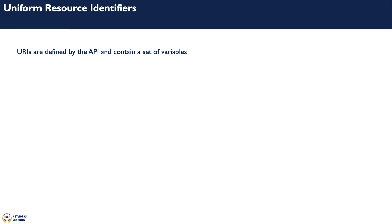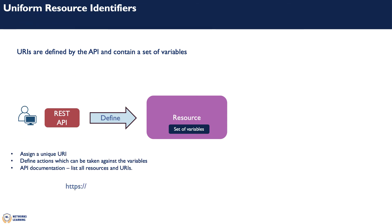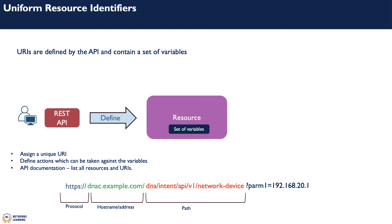Uniform Resource Identifiers, or URIs, are unique IDs assigned to each resource. When creating a REST API, the user defines a set of resources which will be made available via the API. These resources will have a set of variables, but each resource must be uniquely identified using URIs. Here is an example of a URI with these components: protocol, hostname, and a path — and we can drill deeper with a query parameter.